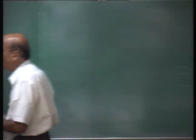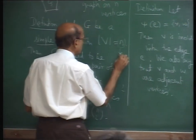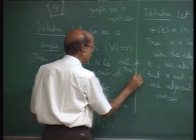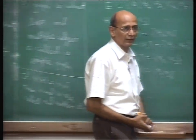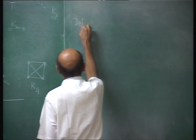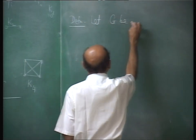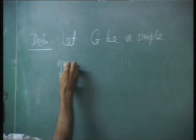That number n is called the order of the graph. Order refers to the number of vertices.